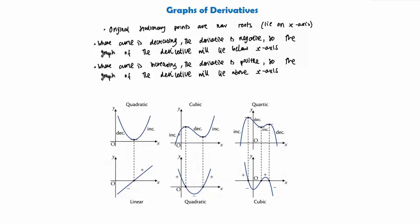The second example is a cubic, which is more complex. It has two stationary points and the curve is increasing, then decreasing, then increasing. Our two stationary points now become roots, and because there are two roots it's probably going to be a quadratic. It lies above the x-axis approaching the first root, then below between the two stationary points, then curves back up approaching the next root, and increases from there.